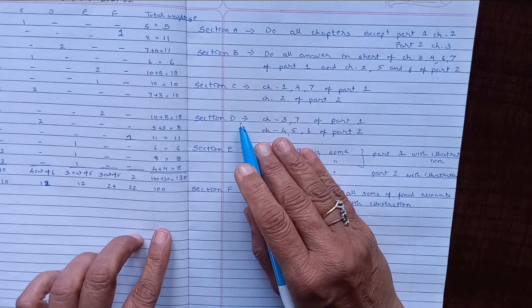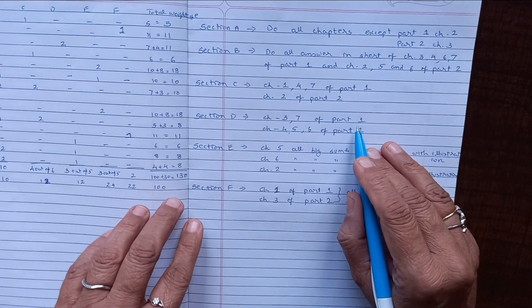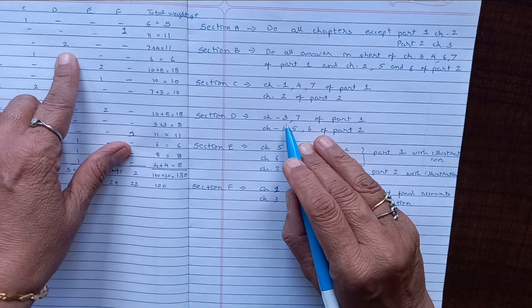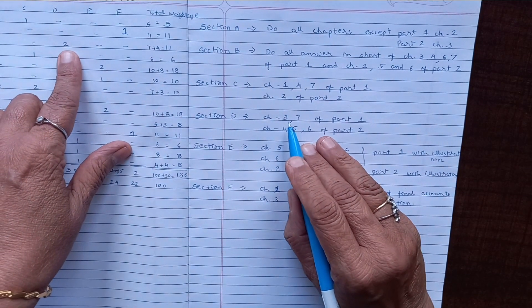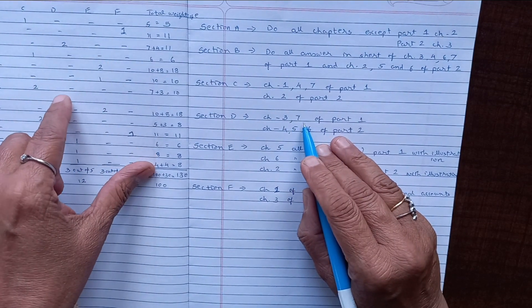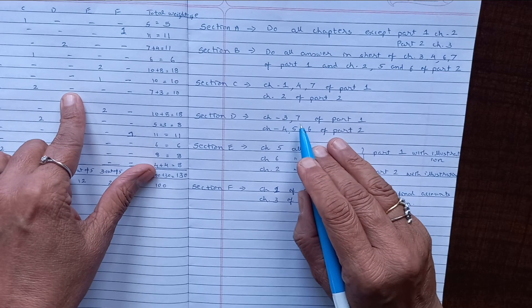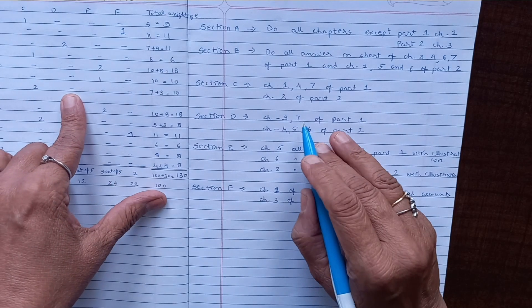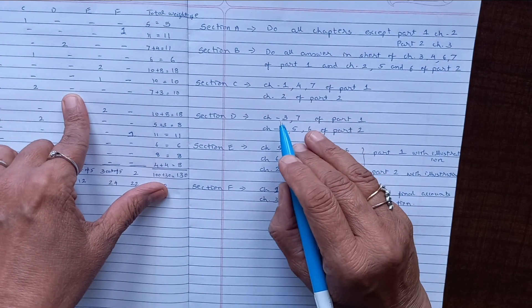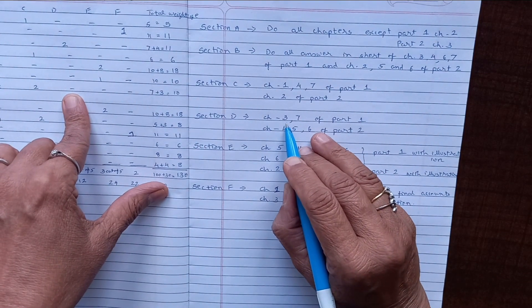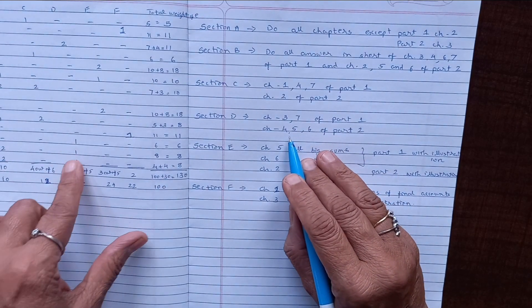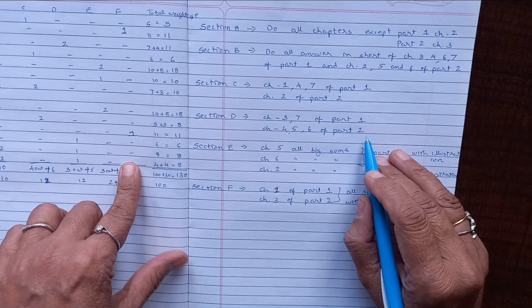For Section D, you have to prepare part one chapter number 3. From this chapter, that is goodwill, they have asked two questions. Chapter number 7, that is dissolution, there is a possibility they will ask from dissolution instead of asking from 3 to 2. They may ask from dissolution also.